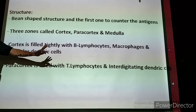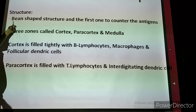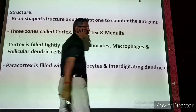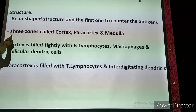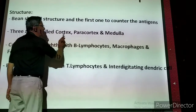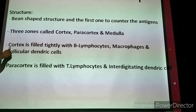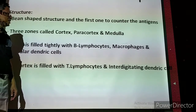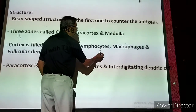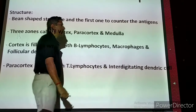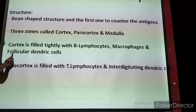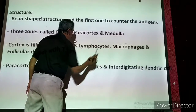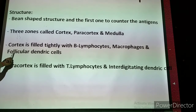The lymph gland or lymph node is a bean-shaped structure and it is the first one to counter the antigen — the first to try to attack the microorganism. Three zones are present: cortex, paracortex, and medulla. The cortex is tightly packed with B lymphocytes, macrophages, and follicular dendritic cells.